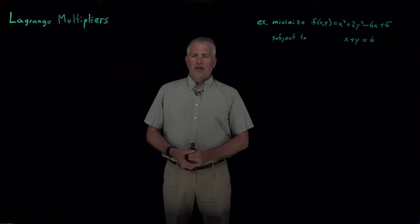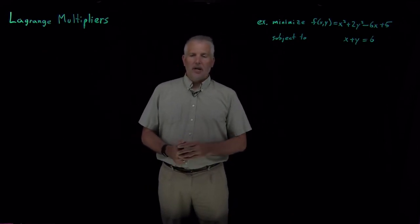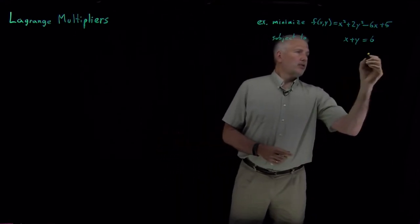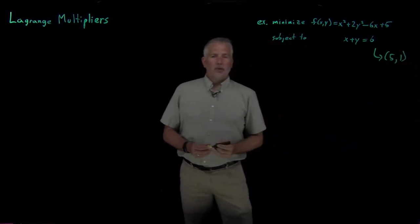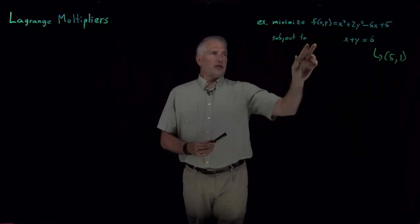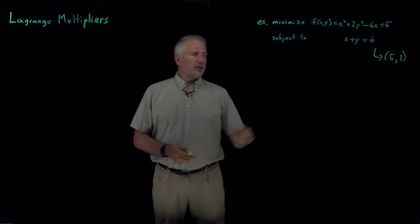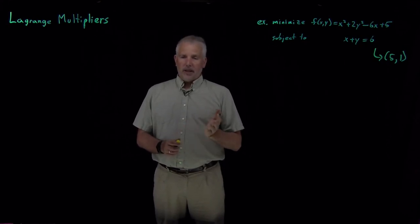We'll now consider a second technique for optimizing a function subject to a constraint. We've already considered the algebraic approach of using the constraint to eliminate one variable. We did that on this example, and just to give away the final answer, we found that the minimum of that function subject to this particular constraint gives us x and y equal to 5 and 1. The goal now is to do that via a different approach.